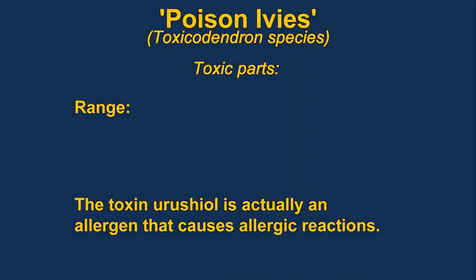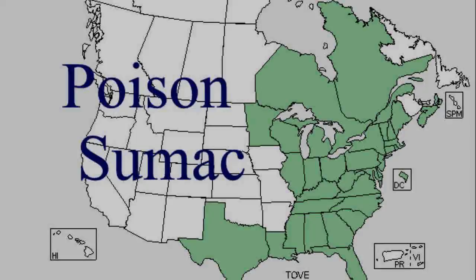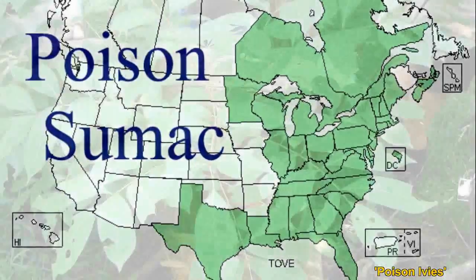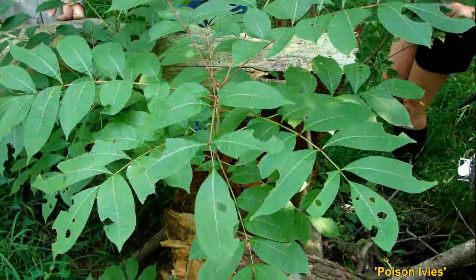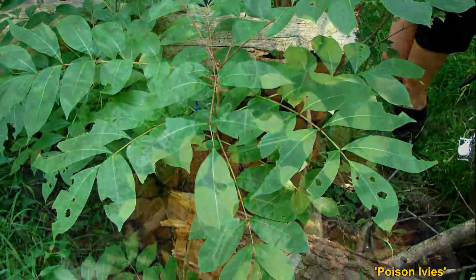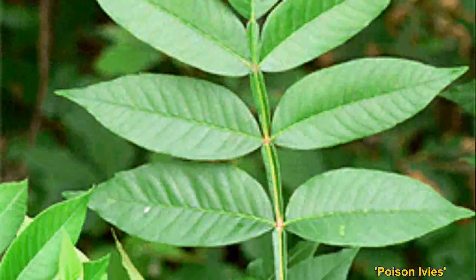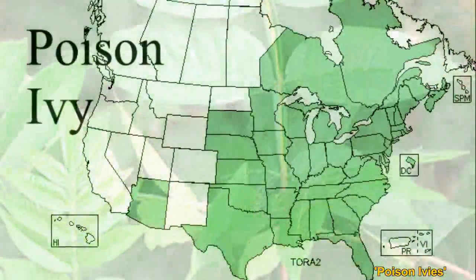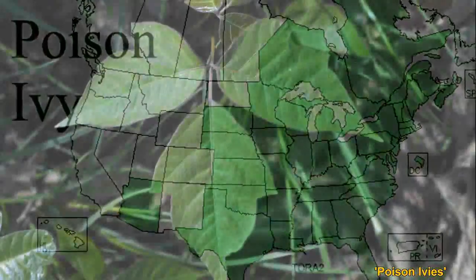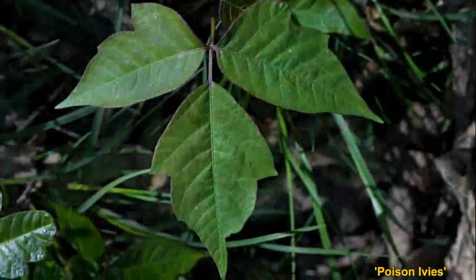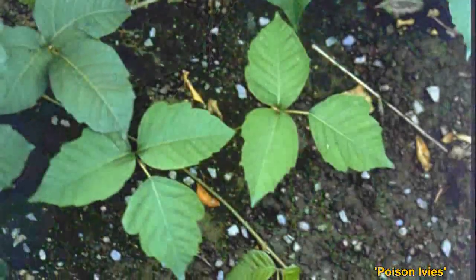Toxicodendrons, or the various species of poison ivies, include poison ivy, poison oak, and poison sumac. The actual toxin is more of an allergen than a toxin — it's an oil that causes allergic reactions in sensitive people.